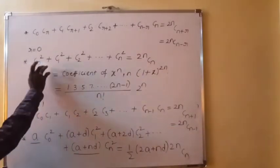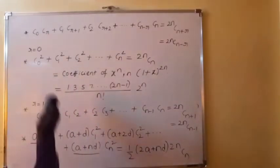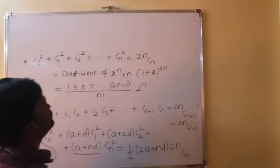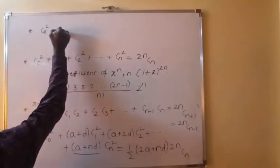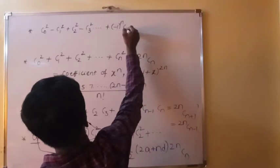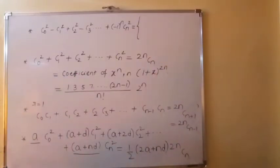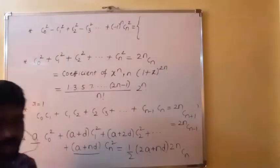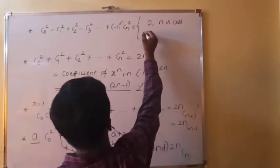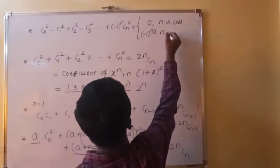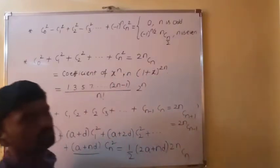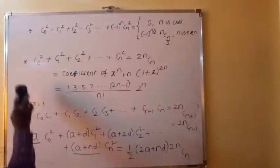Suppose instead we have an alternating series: C0²−C1²+C2²−C3²+...+(−1)^N·CN². This value depends on N. It equals 0 if N is an odd number, and equals (−1)^(N/2)·NCN/2 when N is even.